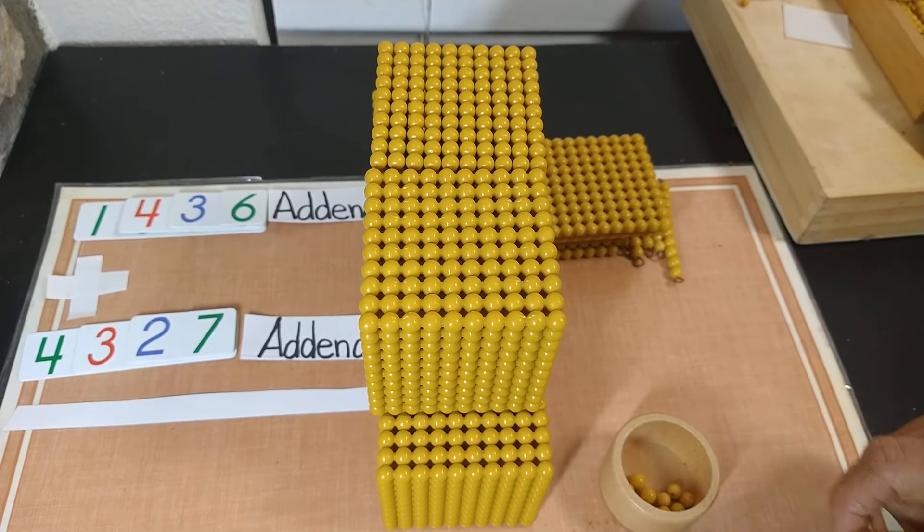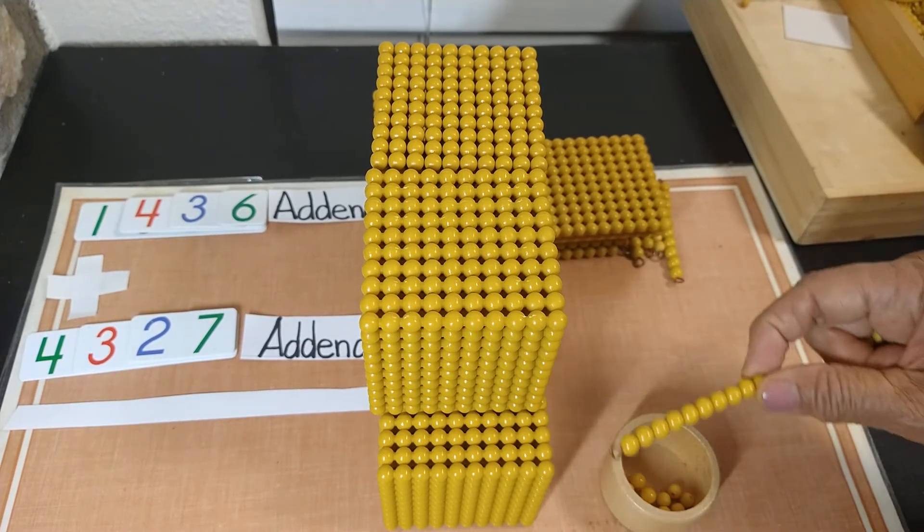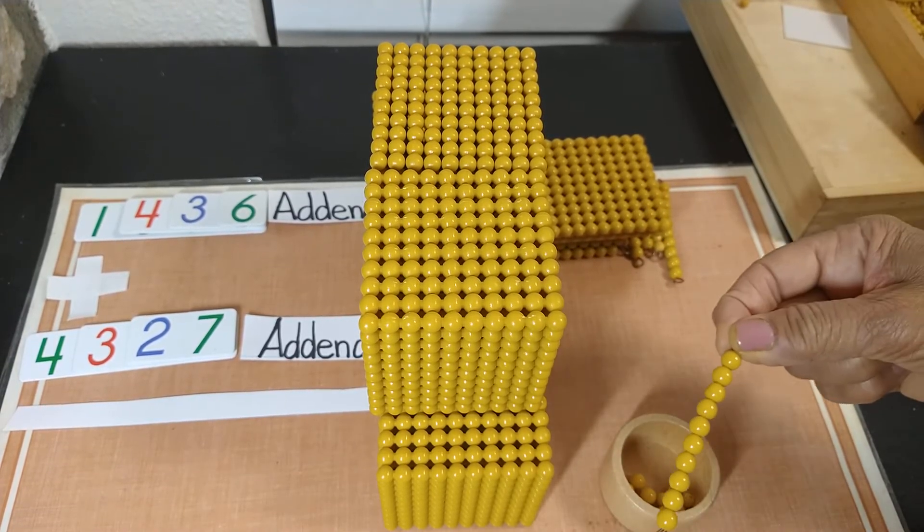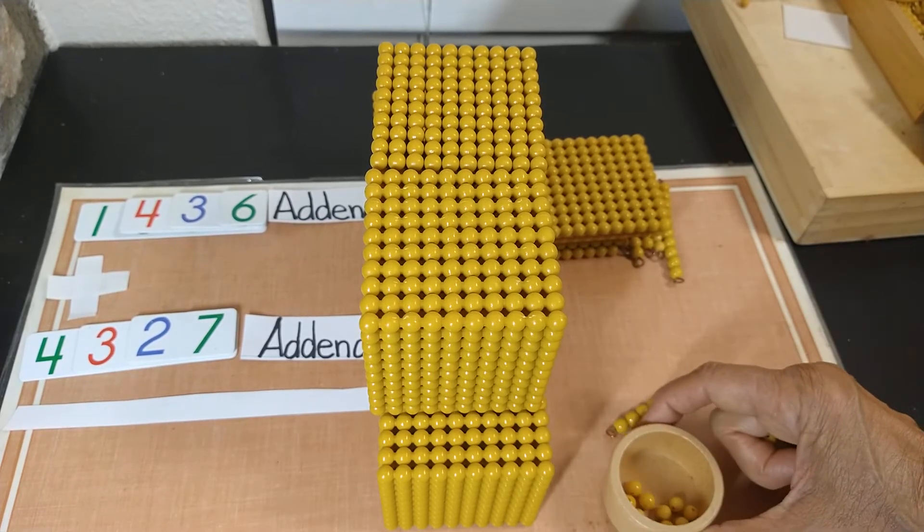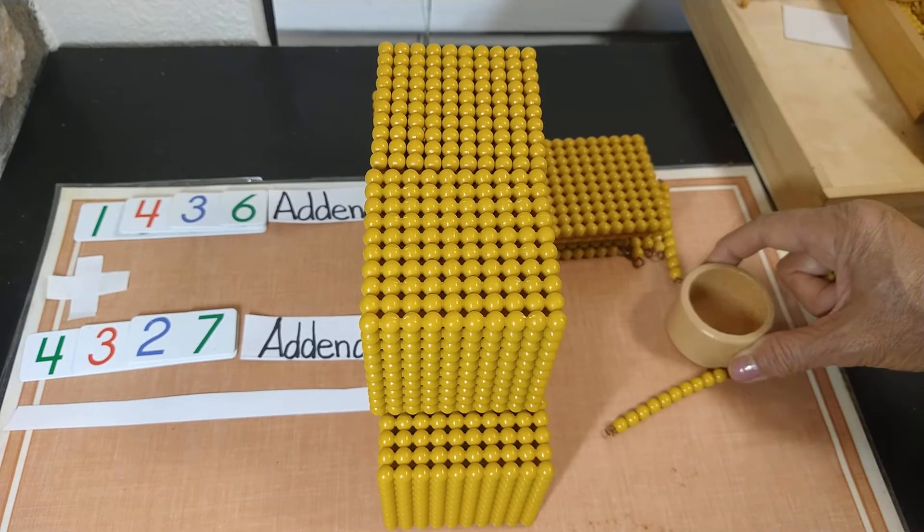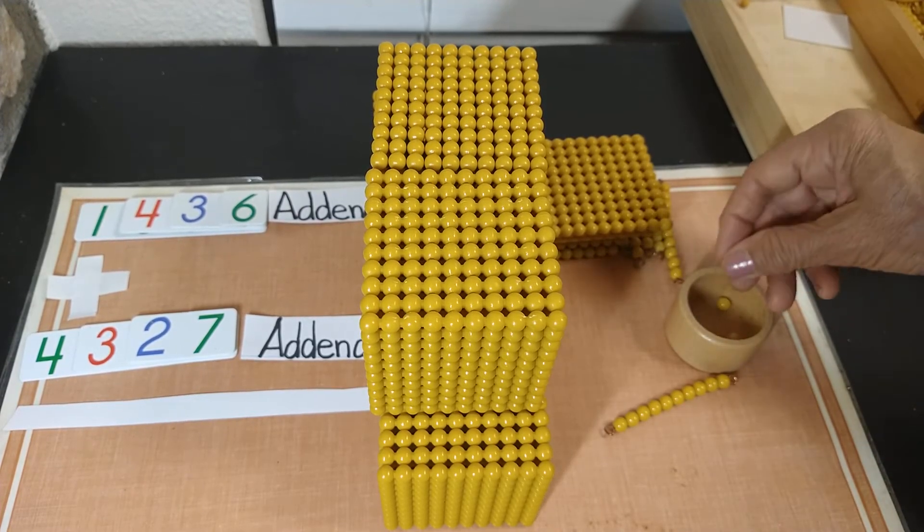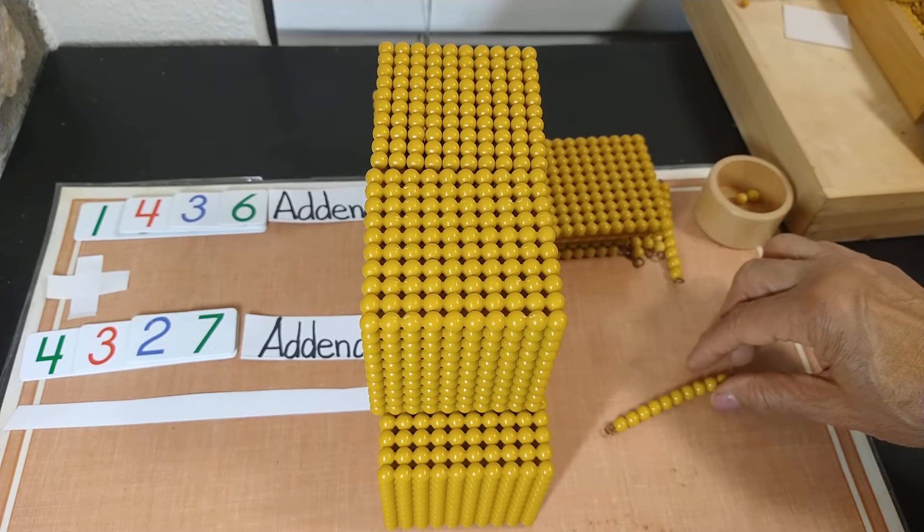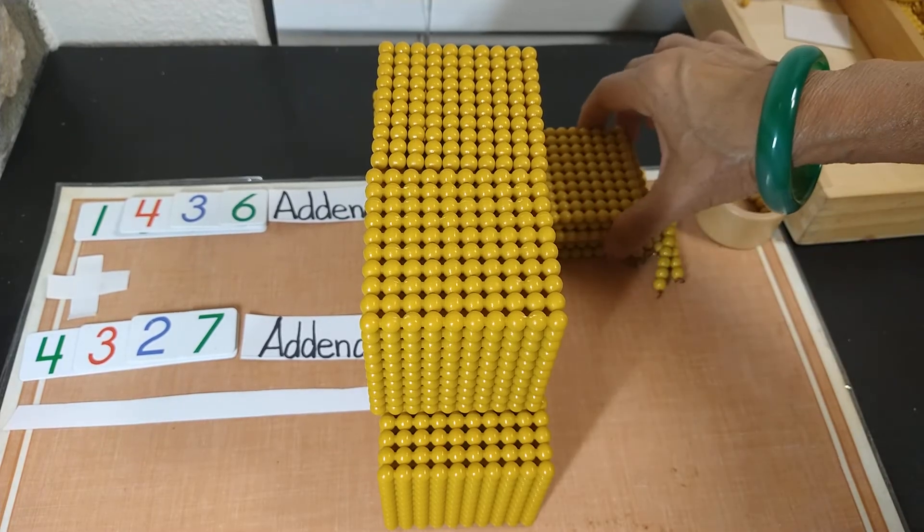We know that 10 units makes 1,10 like that. It has 10 units in it. So since we are taking 1,10, these units are going back in the box. So now we have 3 units left. 1, 2, 3. They will stay here. And this 10 will go, 1,10 will go in the tens category.